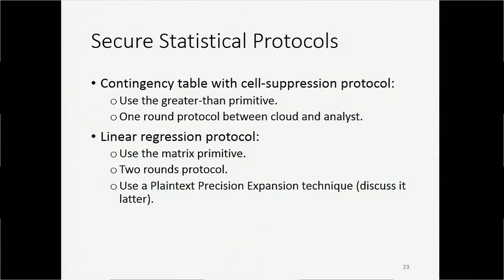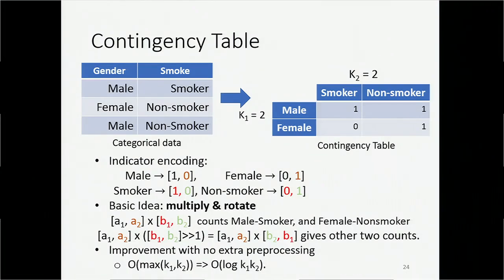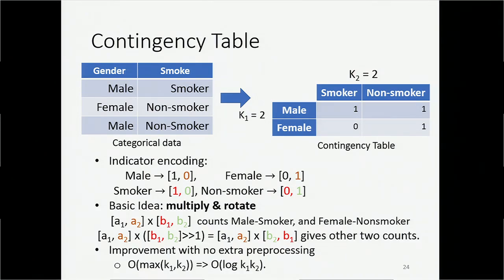The final part of this talk covers two statistical protocols: the protocol for the contingency table and the protocol for linear regression. We also introduce a plaintext precision expansion technique which addresses some implementation concerns. A contingency table is basically doing counting. The basic idea of our method is to do multiplication and then rotation on the encrypted vectors. The first row of computation gives us the counts of male smokers and female non-smokers. To get the remaining counts, we have to rotate the second vector to the right by one unit and take the product again. In our paper, we improved this basic algorithm to run in O(log(k1 × k2)) time.